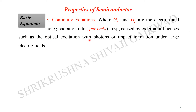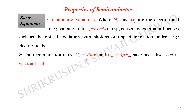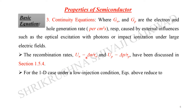The recombination rates are U_n = delta_n / tau_n and U_p = delta_p / tau_p, where tau_n and tau_p are the excess carrier lifetimes discussed in the previous lecture. For the one-dimensional case under low-level injection, these equations reduce to: dn/dt = g_n − (n_p − n_p0)/tau_n + mu_n·n·(dE/dx) + mu_n·E·(dn/dx) + D_n·(d²n/dx²), with a similar equation written for holes.